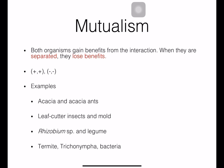In mutualism, both organisms gain benefits from the interaction — plus and plus. However, when they get separated, they will lose the benefits — minus and minus when separate. For example: acacia plants and ants living together, leaf-cutter insects with molds.